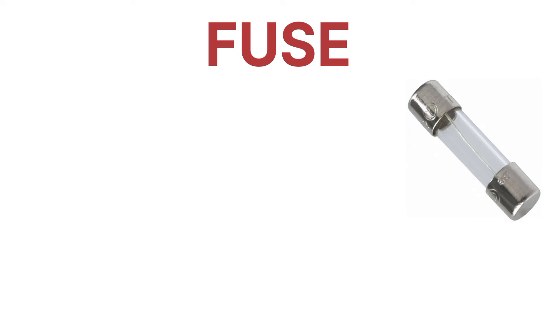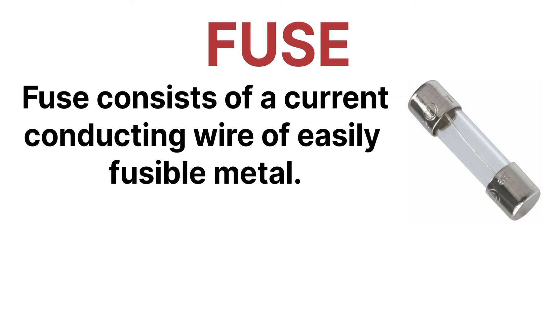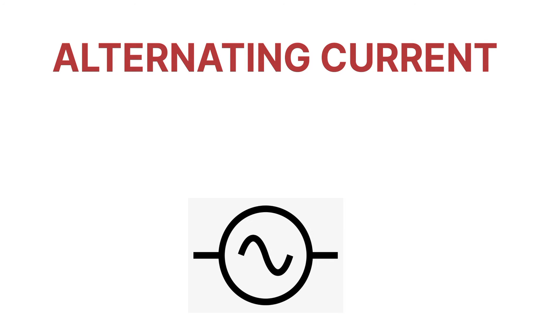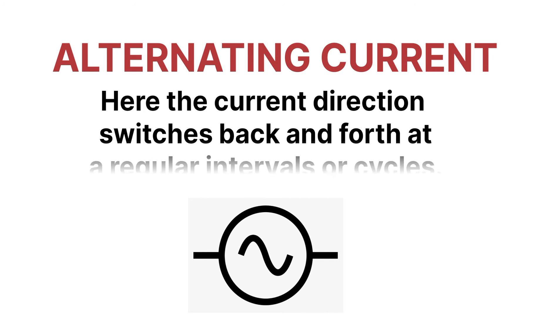Next is a fuse. A fuse commonly consists of a current-conducting strip or wire of easily fusible metal that melts when current is very high in the circuit. The fuse works as a protecting element for the system. Here you can see the symbol for a fuse.